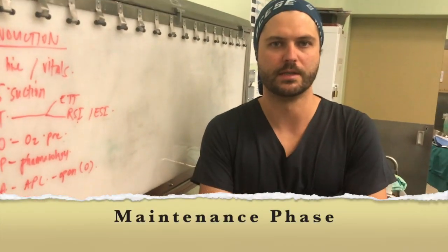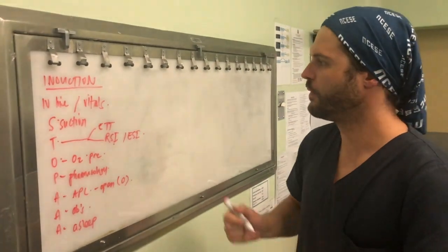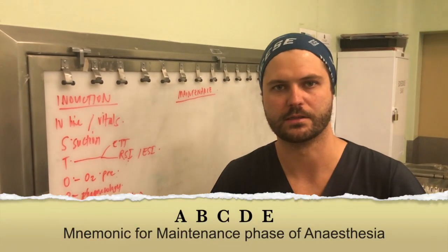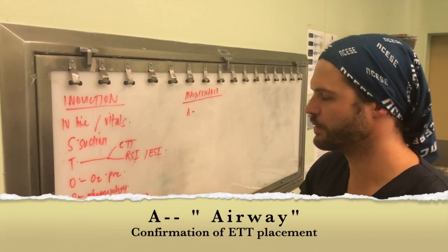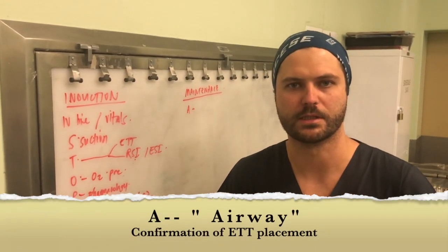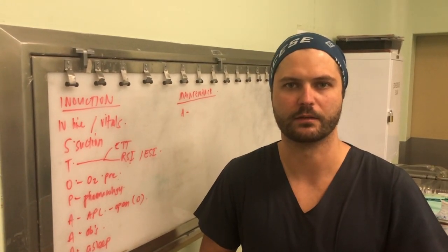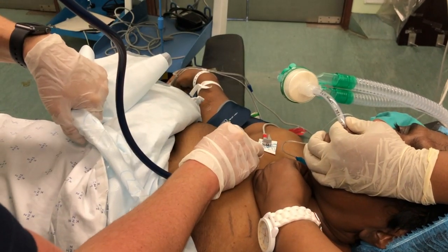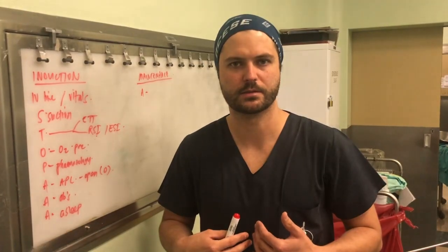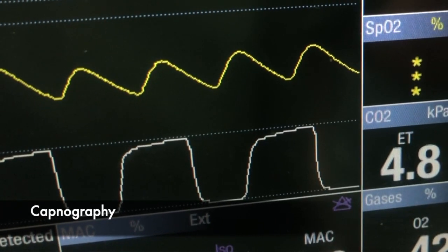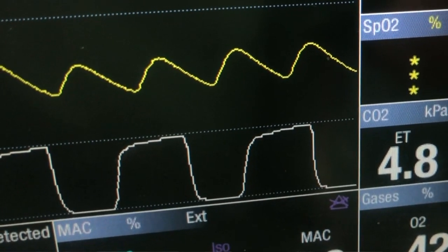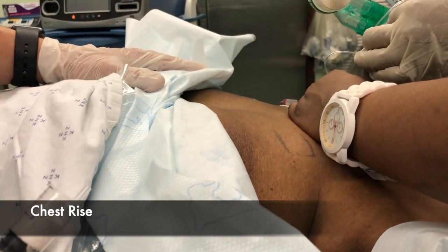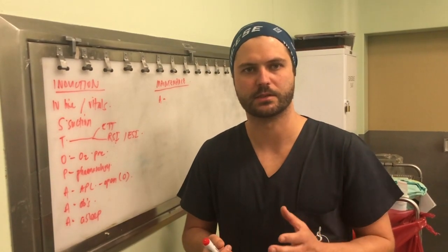We now move on to the maintenance phase of anesthesia. My mnemonic for this is ABCDE, and then we incorporate the triad of anesthesia thereafter. A is for airway — we want to confirm that our ET tube is in. We auscultate over the thorax and over the stomach to make sure it's not in the stomach and not down one bronchus. We then look at capnography, which is our most sensitive marker of correct intubation. We can also look at the ET tube for misting and look for chest rise.